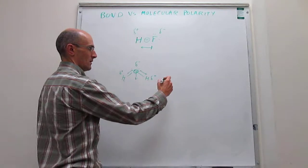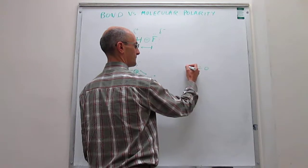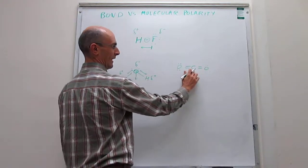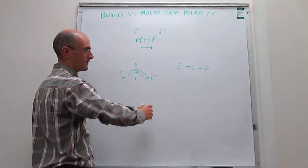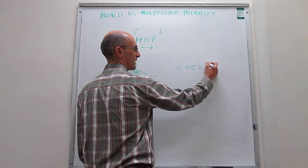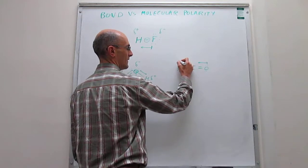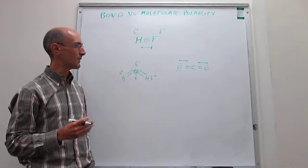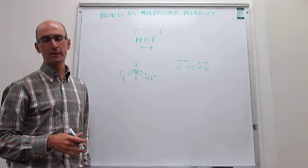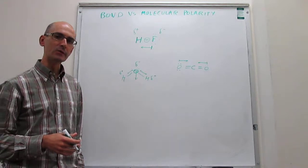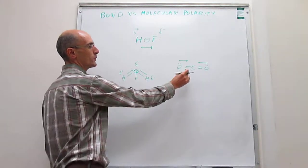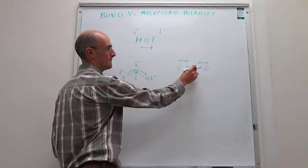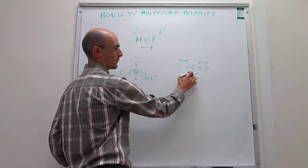Let's work through another example: CO2. We can draw the Lewis dot structure for CO2. Because there is a difference in electronegativity between the central atom and the terminal atoms, there are dipole moments along the bonds — one dipole moment pointing this way and one pointing the other way. They are exactly the same in magnitude but pointing in opposite directions. Combining the Lewis dot structure with VSEPR theory, we can predict the shape: there are only two electron groups around the central atom, the electron group arrangement is linear, and there are no lone pairs, so the shape of this molecule is linear.